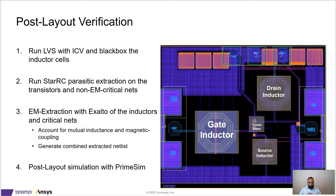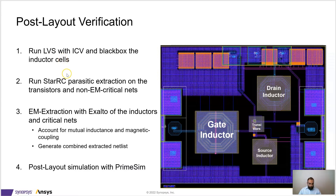This is the layout of the test chip that we've built. We have our transistors in the middle, the gate, drain, and source inductors, and then the pads on the edges. When it comes to post-layout verification for RF, microwave, and millimeter-wave circuits, this is the general flow in the Synopsys custom platform. We are first going to run LVS with IC Validator and black-box the three inductors. We can choose to completely skip the black-box cells, in which case any coupling between routing on higher or lower levels and the black-box cells is ignored.